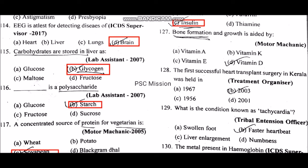Soya bean. Bone formation and growth is aided by vitamin D. The first successful heart transplant surgery in Kerala was held in 2003.